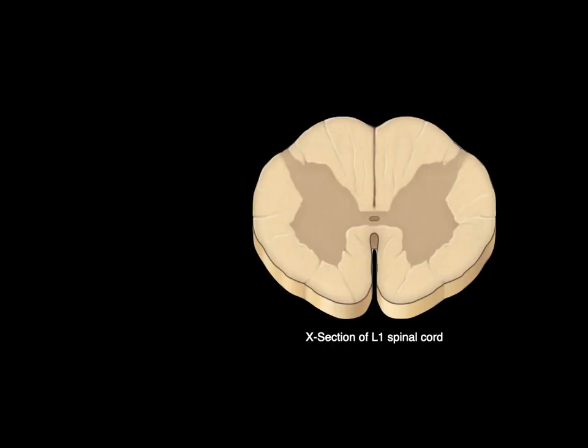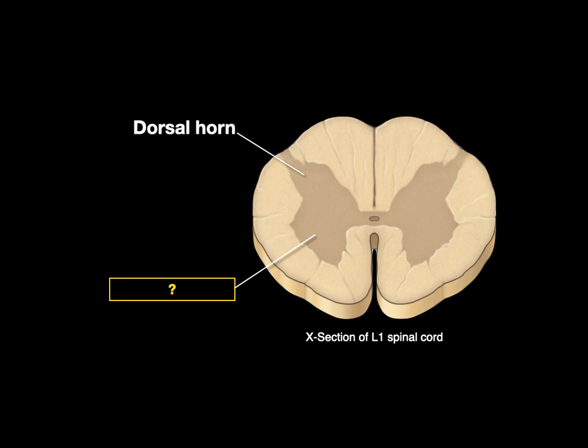Here's a cross-section of the L1 spinal cord level. That is called the dorsal horn of the gray matter. What is this one called? Based upon the dorsal horn — that's the horn in the back — this one is the ventral horn, the one towards the front. They're also called the posterior horn and anterior horn.